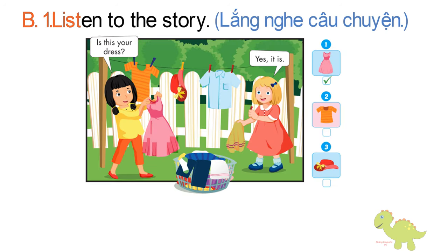B. One. Listen to the story. Is this your dress? Yes, it is. Cool t-shirt. Is this your t-shirt? No, it isn't. Is this your hat, Sue? Yes, it is. It's great. Thank you.